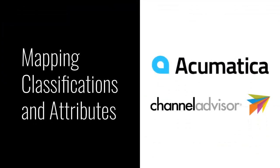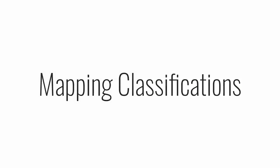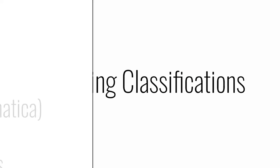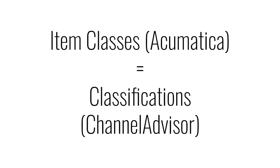Product attribute and item class data must be mapped prior to transferring data from Acumatica to Channel Advisor. First, let's map our classifications. Item classes in Acumatica map to classifications in Channel Advisor. Both item classes and classifications serve the same function, so we can map the two together for data transfers.